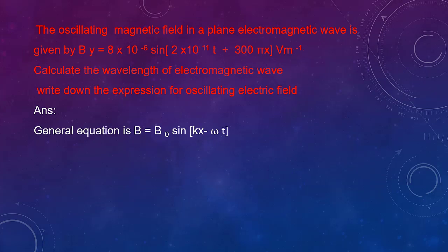The oscillating magnetic field in a plane electromagnetic wave is given by B = 8 × 10⁻⁶ sin(2 × 10¹¹t + 300πx) V/m. Calculate the wavelength and write the expression for oscillating electric field. For such questions, we take the general equation for the magnetic field: B = B₀ sin(kx - ωt), where k is the propagation constant.